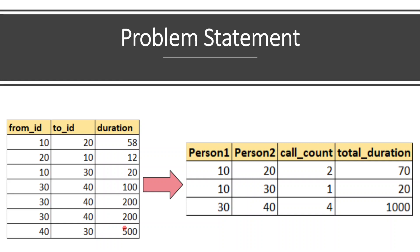As long as we know how to write a GROUP BY statement in SQL, we can solve this problem. In order to get the number of calls between two people, we can use the COUNT aggregate function, and for total duration we use SUM. It's pretty straightforward. But this is classified as medium complexity because when we look at this table manually, we can understand 10-20 and 20-10 are the same set of people. But the SQL engine is going to treat both records differently — it will consider 10,20 as a different combination from 20,10.